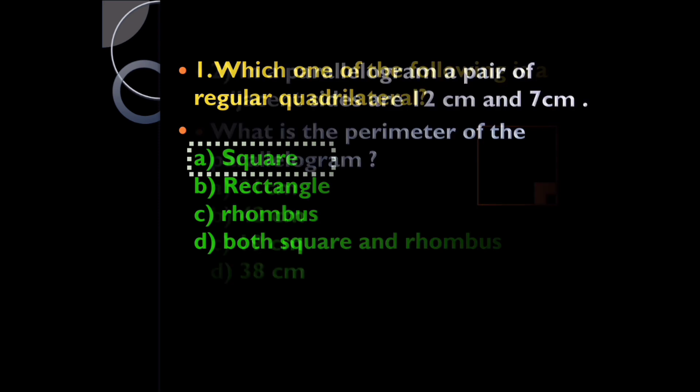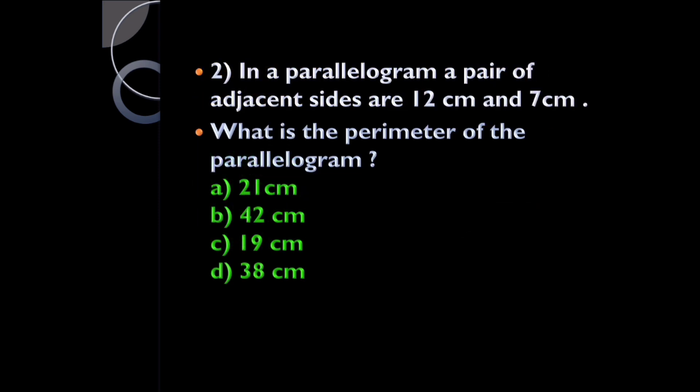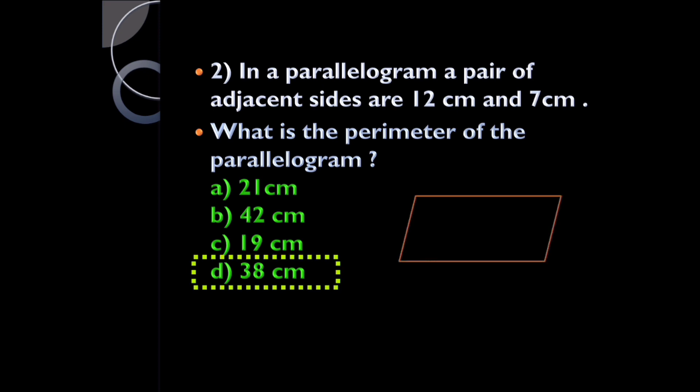Question two: in a parallelogram, a pair of adjacent sides are 12 centimeters and 7 centimeters. What is the perimeter of the parallelogram — 21 cm, 42 cm, 19 cm, or 38 cm? It is 38 centimeters. In a parallelogram, opposite sides are equal, so to get the perimeter we add all four sides and we get 38 centimeters.